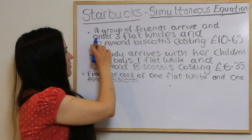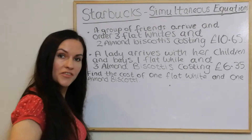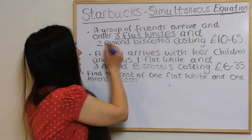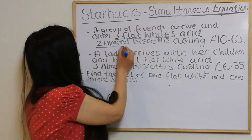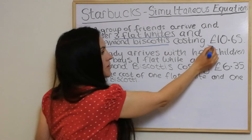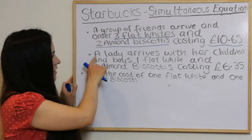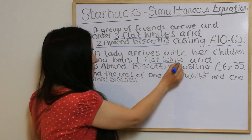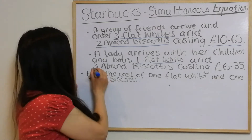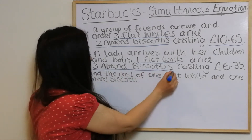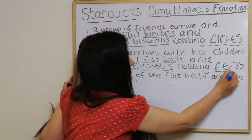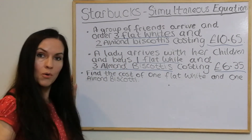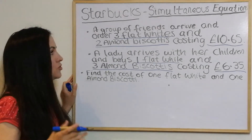In this example, a group of friends arrive and order three flat whites and two almond biscottis costing ten pounds sixty-five. A lady arrives with her children and buys one flat white and three almond biscottis costing six pounds thirty-five. These are both completely realistic situations. Find the cost of one flat white and one almond biscotti.